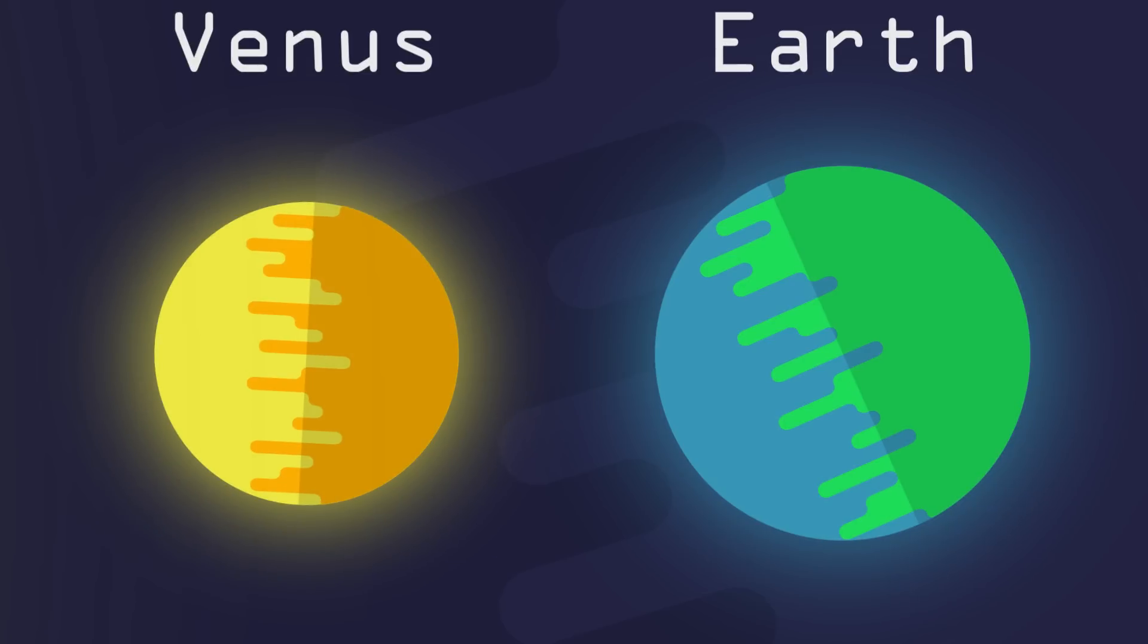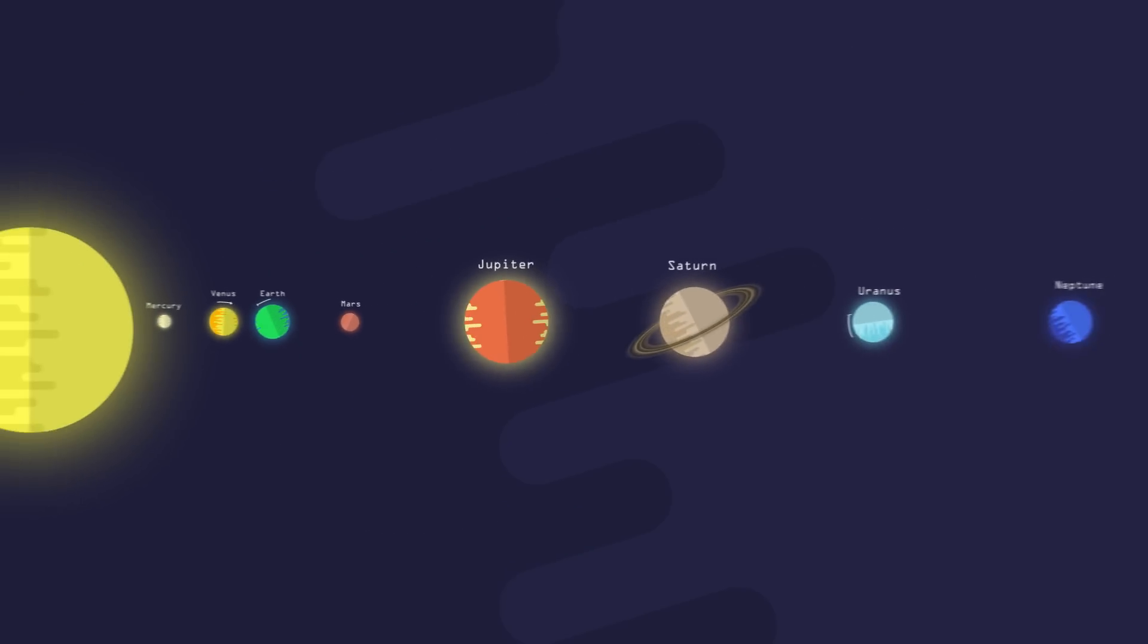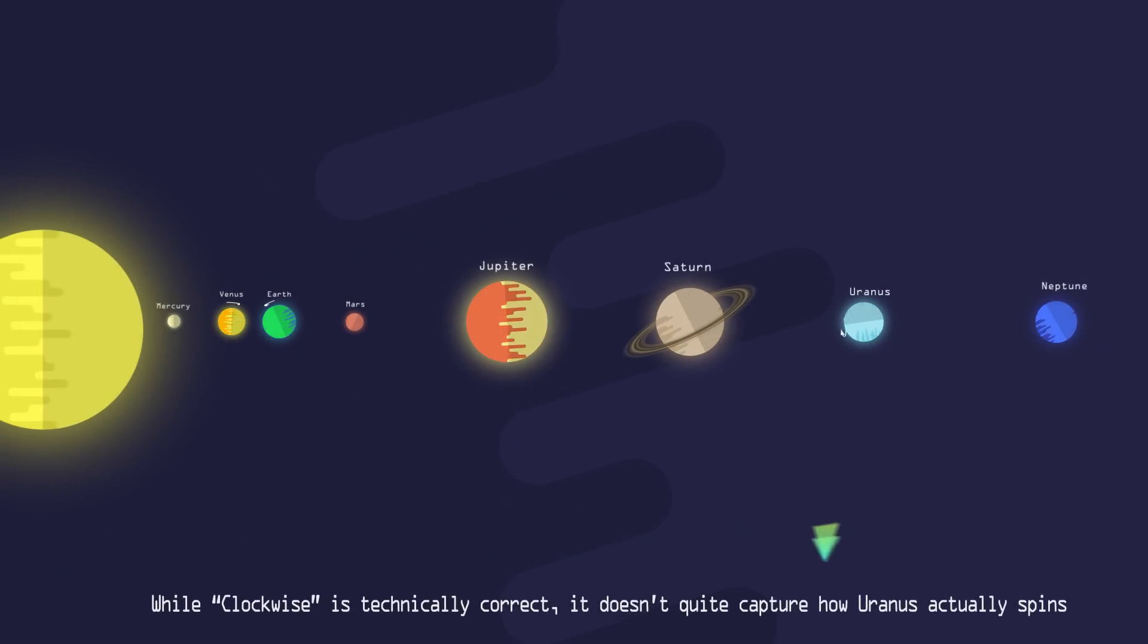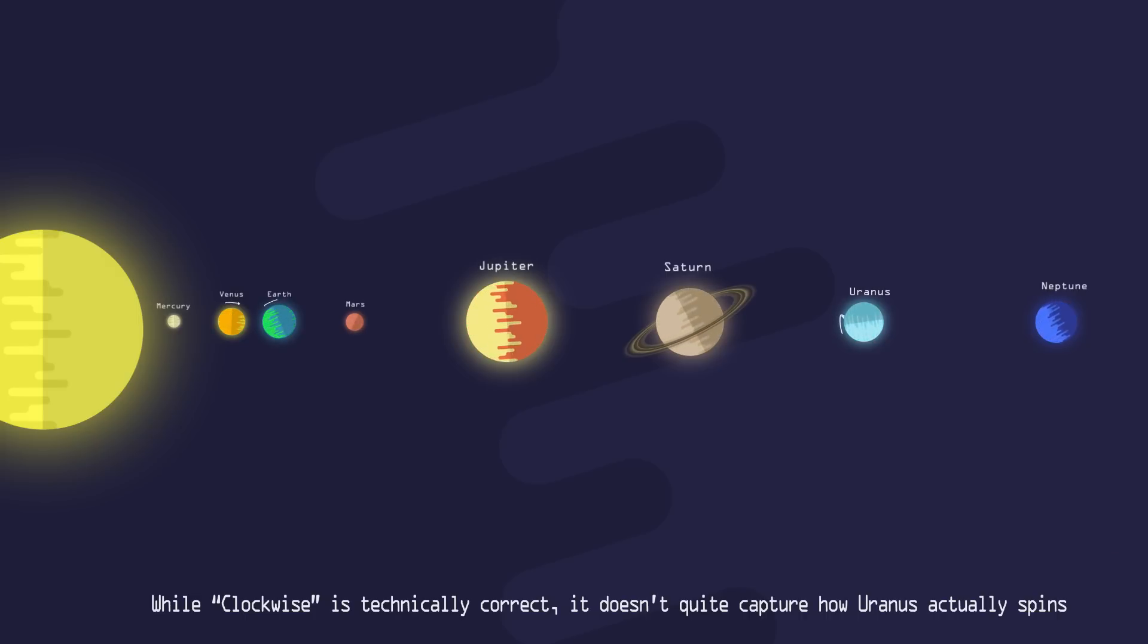But Venus is different. Venus rotates in the opposite direction of Earth. In fact, Venus rotates in the opposite direction of all the other planets. Only Uranus joins Venus in rotating clockwise. All the other planets rotate counterclockwise on their axis.